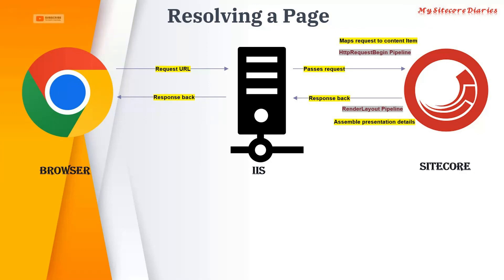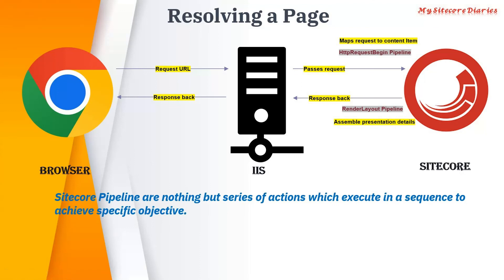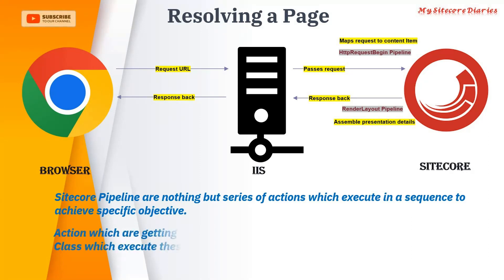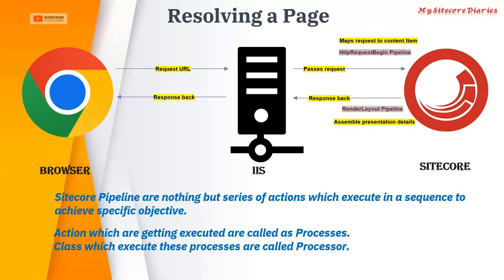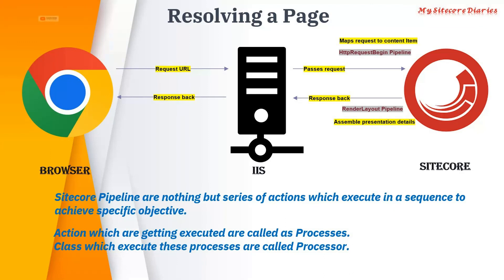Sitecore pipelines are a series of actions executed in sequence to achieve a specific objective. The actions being executed are called processors, and the classes that execute these processors are called processors as well. There are many pipelines in Sitecore. For this video, just understand that the HTTP request begin pipeline maps the request to the content item, and the render layout pipeline assembles the presentation details into the final page.